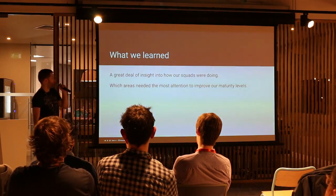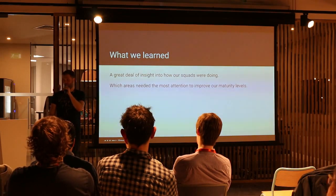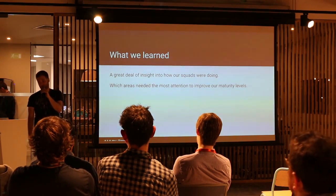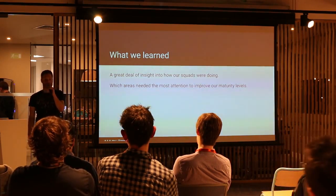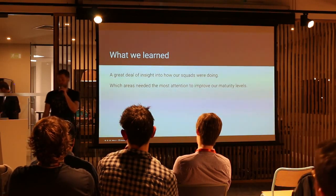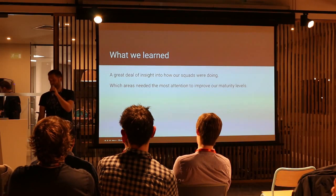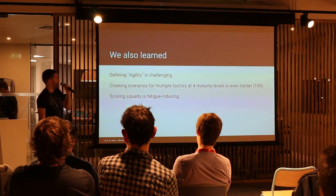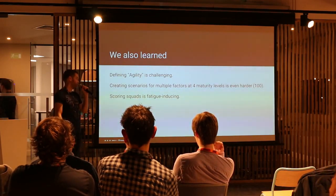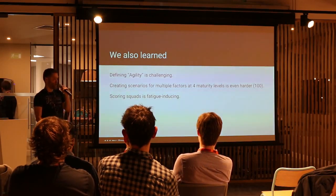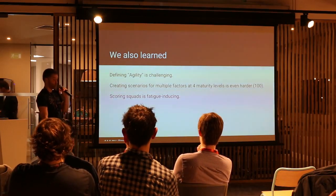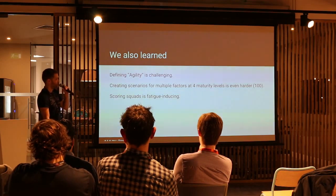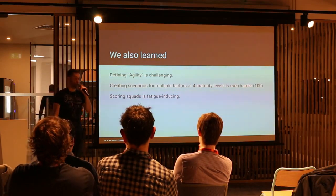What did we find out from this maturity model? We got a great deal of insight. Some squads said they didn't have as much insight into the future vision and goals as they wanted. Some squads felt they didn't receive enough feedback on the impact of the work they delivered. And some squads felt they were physically too large and could benefit from being separated into smaller sub-teams. We also learned that defining agility in and of itself is actually quite a challenging thing — creating scenarios for all of these multiple themes and the factors within them, multiplied across four maturity levels, is even harder. So there are 100 of these things to consider — it's quite heavyweight.